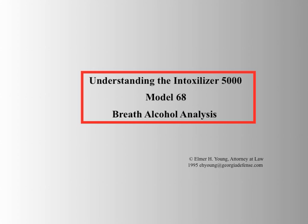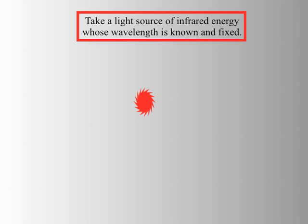The theory behind infrared photochemical breath testing is simple. This slideshow, put together by Elmer H. Young, a Georgia DUI defense attorney, explains how the Intoxilyzer 5000 model 68 breath alcohol analysis machine works. Essentially, the Intoxilyzer 5000 breath test machine measures light.